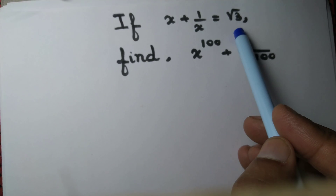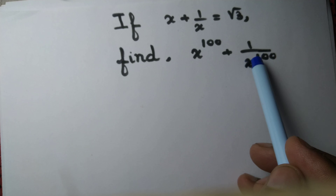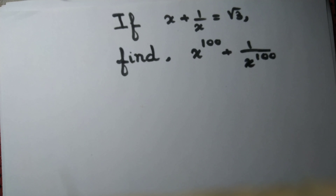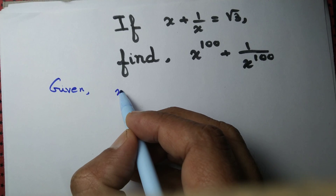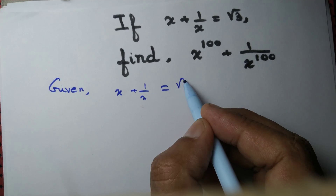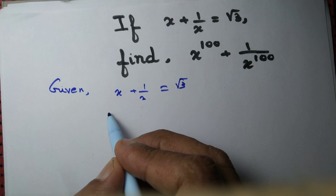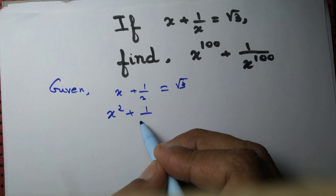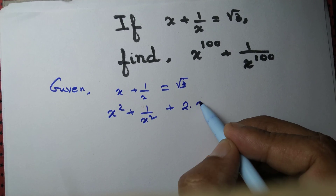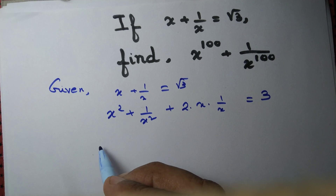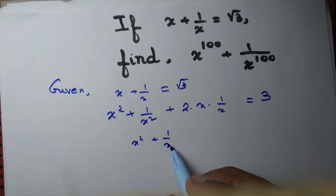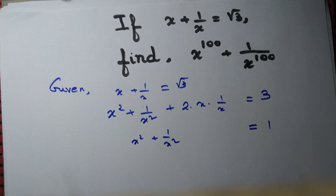If x plus 1 by x equals root 3, can we find x to the power 100 plus 1 by x to the power 100? The answer is yes. We are given x plus 1 by x equals root 3. Let's square both sides: x squared plus 1 by x squared plus 2 times x times 1 by x equals 3. Root 3 squared is 3, so that gives us x squared plus 1 by x squared equals 3 minus 2, which is 1.